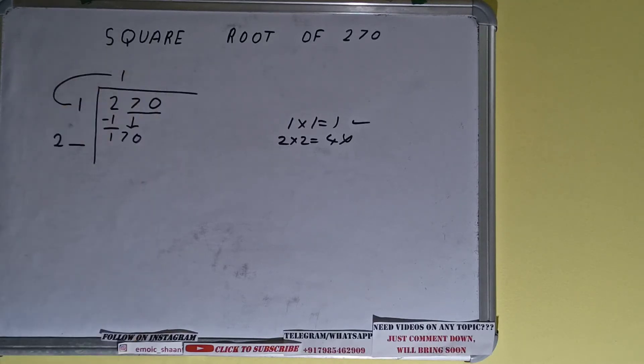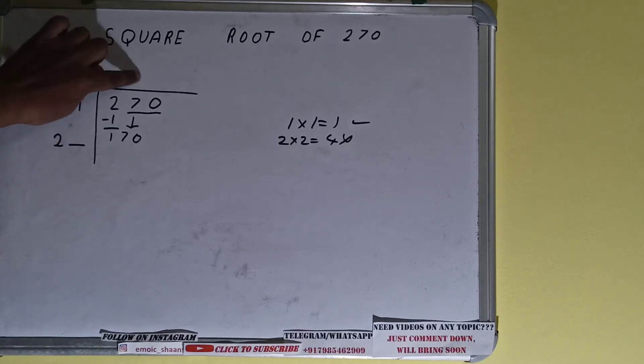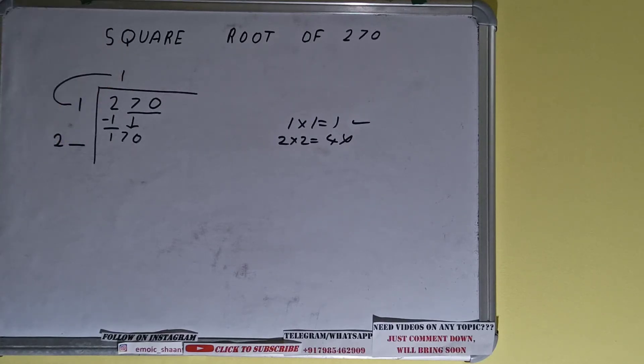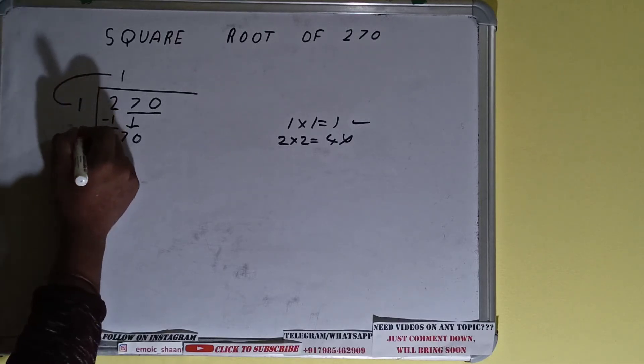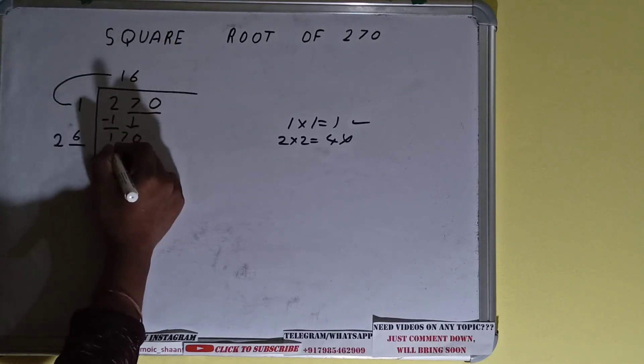Now whatever number we use here we have to use here also. So if we use seven here and seven here it will be 189, that is bigger than 170, so we cannot use that. We have to use six. Six here and six here will give 156.